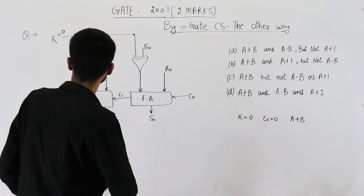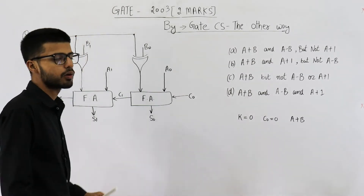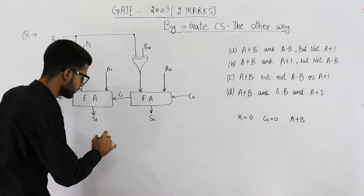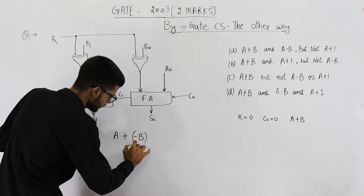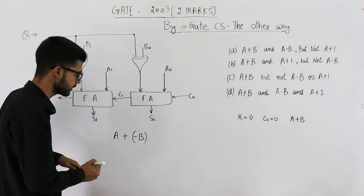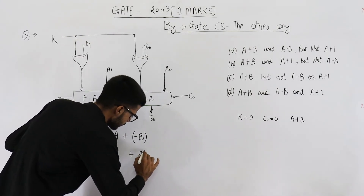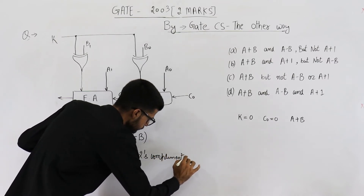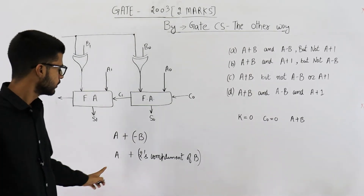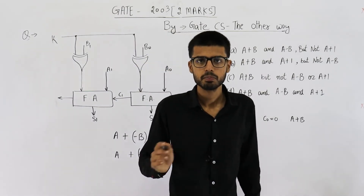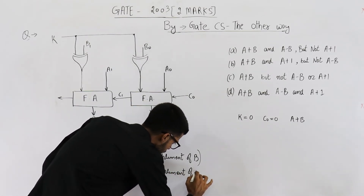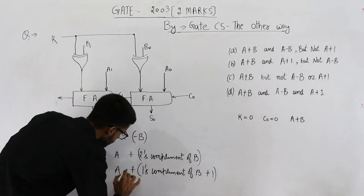Now let us see how to perform subtraction. The full adders can only add numbers, not subtract. But if we compute a plus (negative b), then negative b can be represented using 2's complement form. So we want the 2's complement of b, while a is left as it is. The 2's complement is the 1's complement of b plus 1.